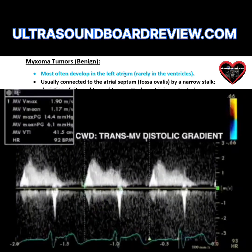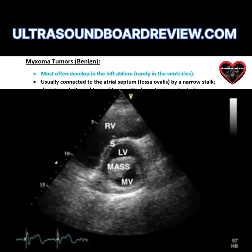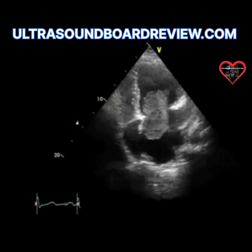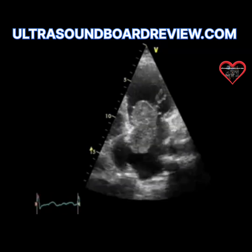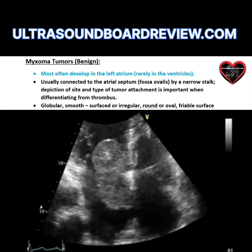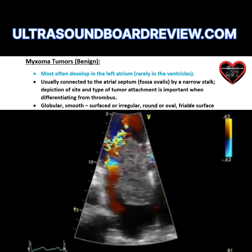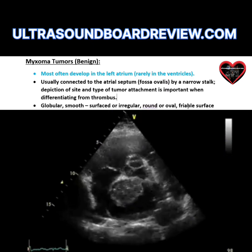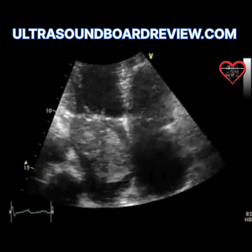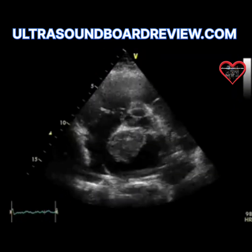Most of the time myxomas are found in the left atrium, and they can be found in the right atrium. What you want to look for is a connection of the tumor to the fossa ovalis. On your boards, you'll have still pictures with an arrow pointing to some weird structure in the atria, probably the left atrium. You're going to want to look for a globular smooth surface — it's usually round or oval — and it's going to connect to the left atrial septum or the fossa ovalis. If they get large enough, they can impede diastolic filling and cause mitral valve stenosis.